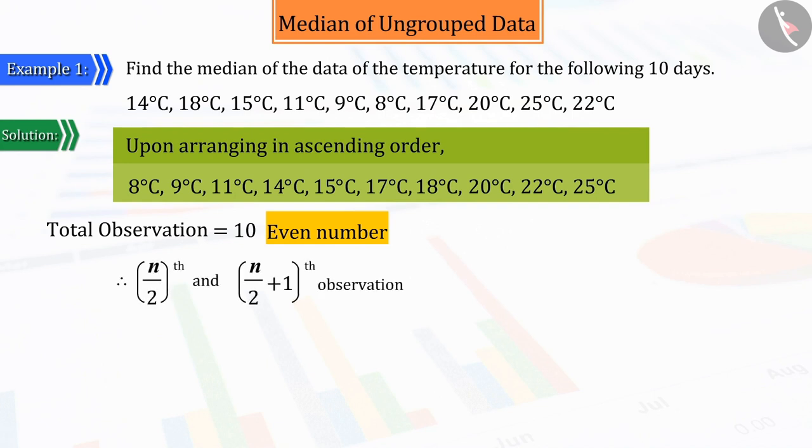We have learnt that if the number of observations is even, then to get the median, we have to find the mean of n by 2th observation and n by 2 plus 1th observation.